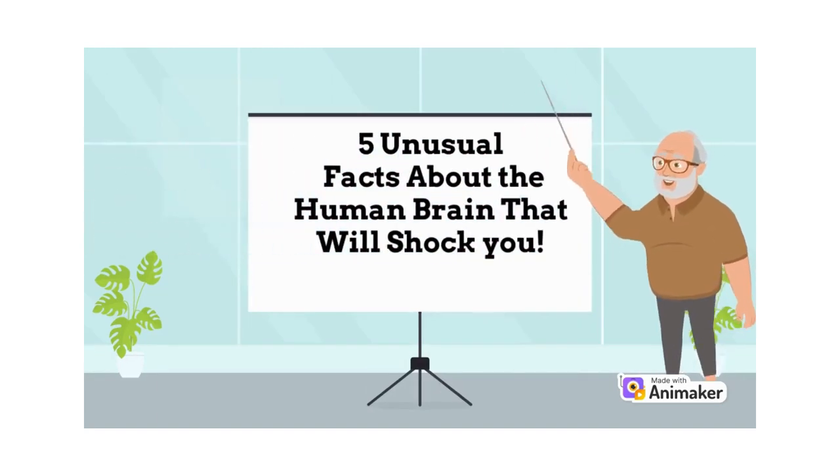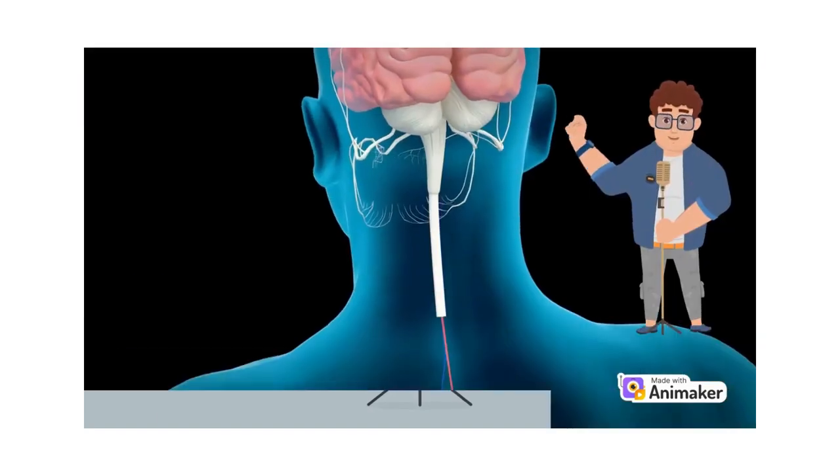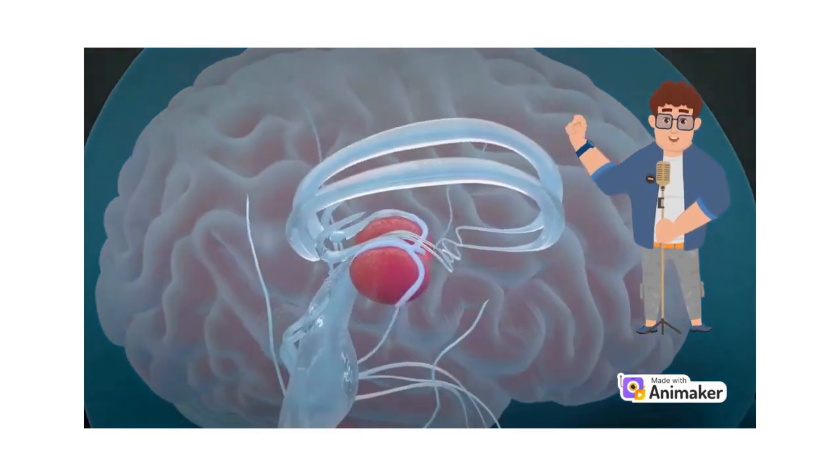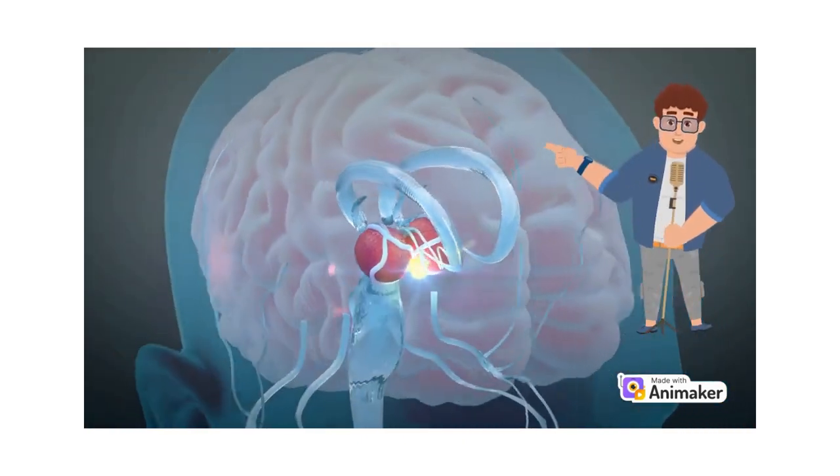Five unusual facts about the human brain that will shock you. Our brain is constantly changing. The brain is the most complex organ in the human body and is made up of billions of cells called neurons.